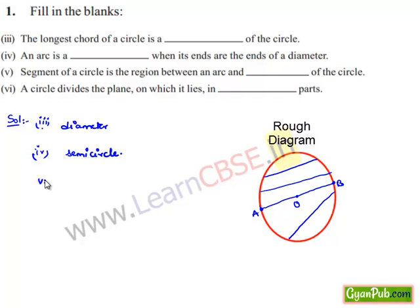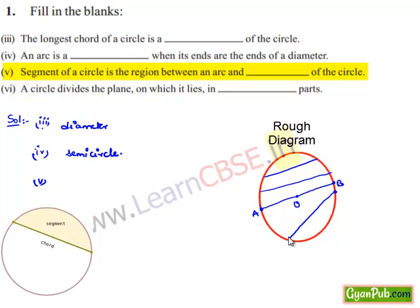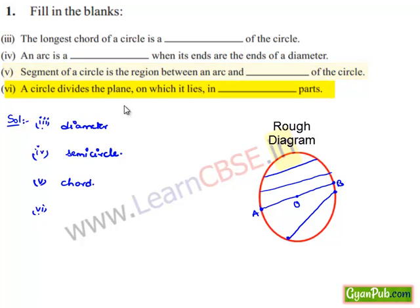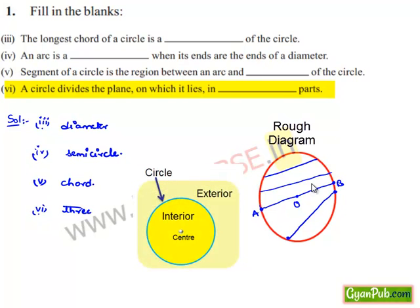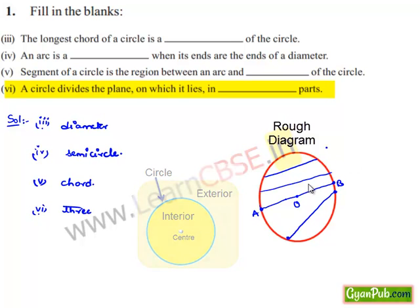Moving on to the fifth bit: the segment of the circle is a region between the arc and the circle. By definition, the segment of the circle is the region between the arc and the chord of the circle. Moving on to the sixth bit: a circle divides the plane on which it lies into three parts, because the points are of three types — the interior of the circle, the exterior of the circle, and points lying on the circle. Therefore, a circle divides the plane into three parts.